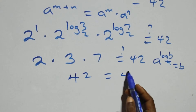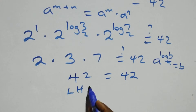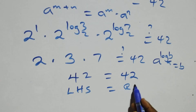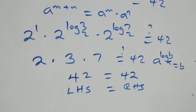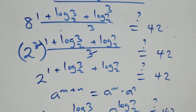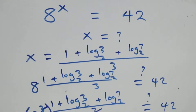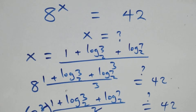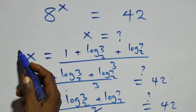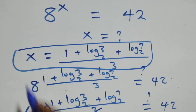Which equals 42 on this side. Left hand side equals the right hand side. Therefore, we conclude that x equals to 1 plus log 3 base 2 plus log 7 base 2, all over 3, satisfies the given problem.